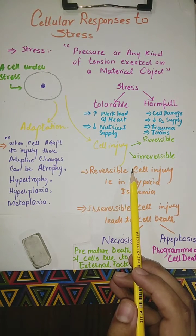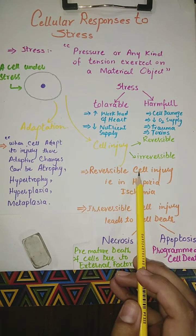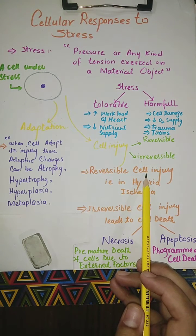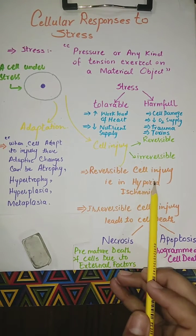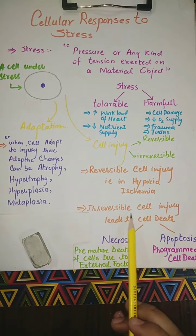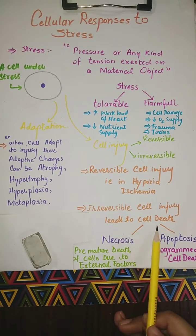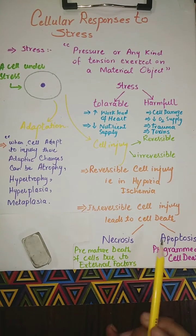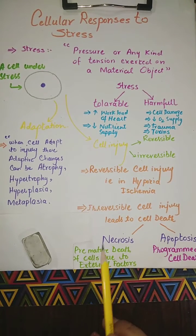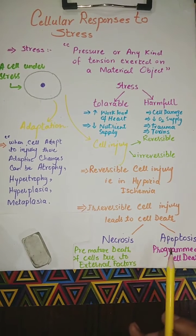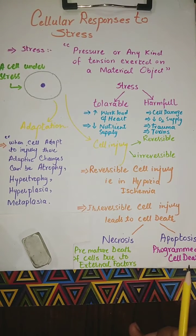However, if the stress is severe, persistent, and rapid in onset, it results in irreversible injury and the death of the affected cell. Irreversible cell injury leads to cell death — necrosis and apoptosis. Necrosis is a premature death of the cells due to external factors. Apoptosis is a programmed cell death.